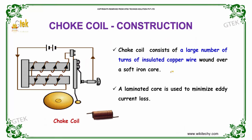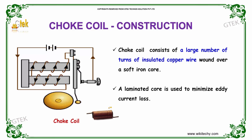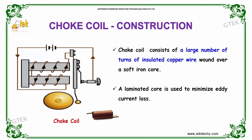The choke coil consists of a large number of turns of insulated copper wire wound over a soft iron core. A laminated core is used to minimize the eddy current losses.